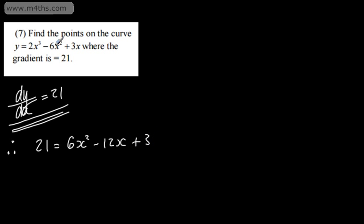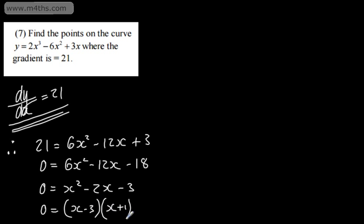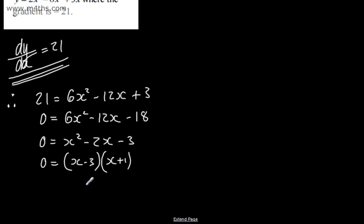So all I've done is differentiate y with respect to x. Setting the equation to zero: 6x squared minus 12x plus 3 minus 21 equals 0, giving 6x squared minus 12x minus 18 equals 0. Dividing by 6: x squared minus 2x minus 3 equals 0. That factors as x minus 3 times x plus 1 equals 0. So x is equal to 3, and x is equal to negative 1.